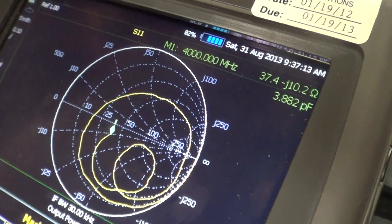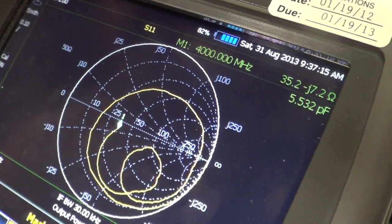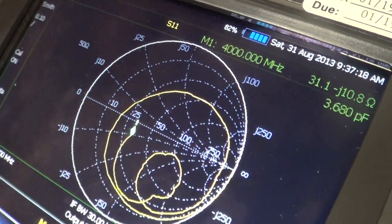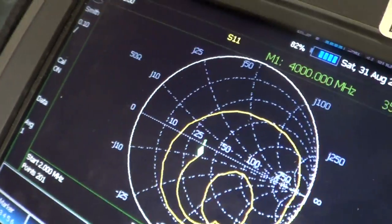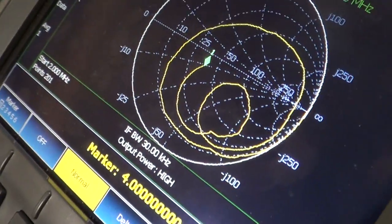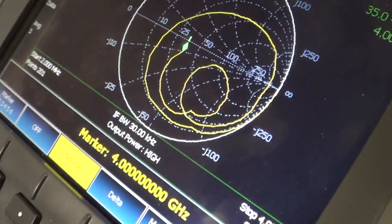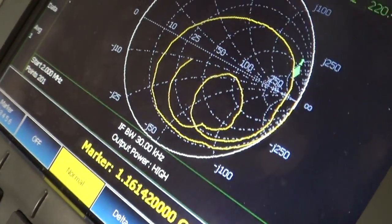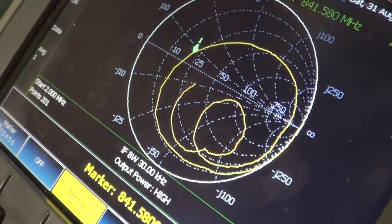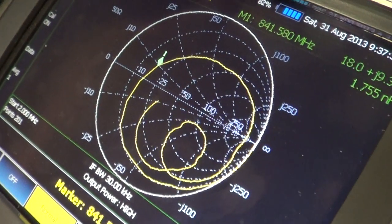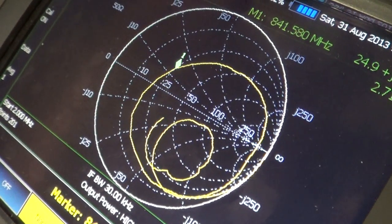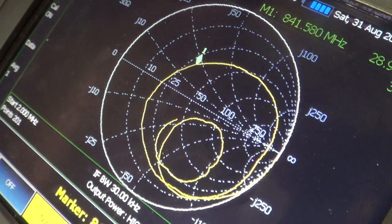If I move my hand near this, you can see I can pull the resonance around. If I bring something metal close to that or something conductive, even if you go down here to the lower end, you can get close - I can change the shape of the Smith curve.